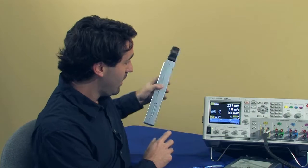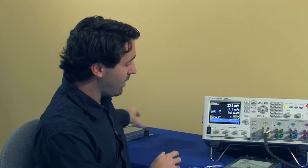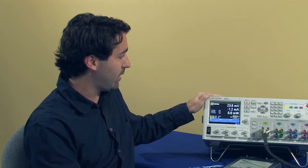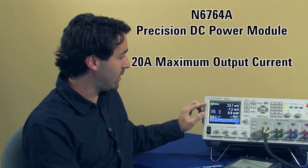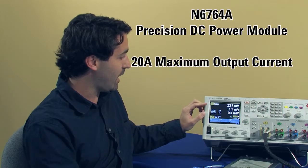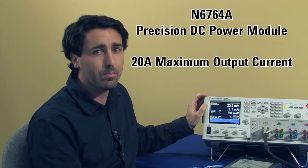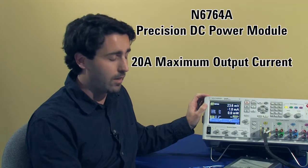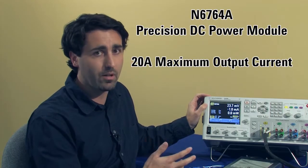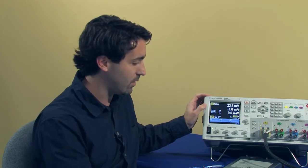So we have some other modules in the N6700 family that have higher output currents, such as the one I have installed in the DC power analyzer mainframe. The one I have in here is the N6764A. That has a maximum current of 20 amps, and if you have that you can actually charge a lot faster by sourcing 20 amps to the capacitor.